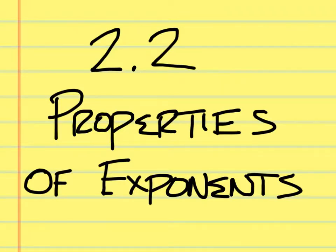Section 2.2: Properties of Exponents. You have a bunch of properties to look at today — you must know these before you do the problems. All of this should look familiar because it is from Algebra 1, and we're still early in Algebra 2, so we have to make sure you know this stuff before we go upwards and onwards. Algebra 2 is not a review of Algebra 1; it's a continuation of it.